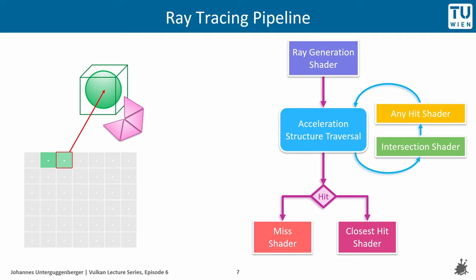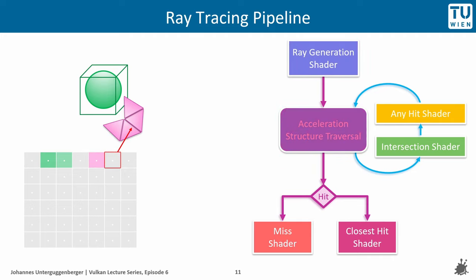The next pixel in that row might miss all geometry in the acceleration structure again, leading to another miss shader invocation. A ray for another pixel might hit a triangle mesh, which goes through acceleration structure traversal but uses an internal intersection shader, because the geometry is a triangle mesh and not procedurally described. The closest hit shader is invoked and a color is computed. We will also discuss the any hit shader later, which was not required for this simple example.